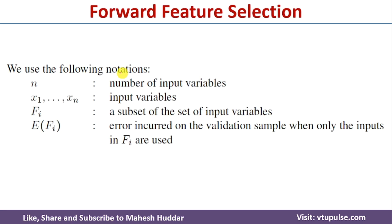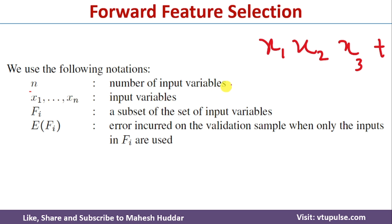In forward feature selection, we use the following notations. N is the number of input variables. Let us assume that we have been given a dataset where three features or input variables are there, so N will become three. We use x1, x2, ..., xN as the input variable names. In this case, we have three features, so we will name them x1, x2, x3, and t is the target. Fi is a subset of this set of input variables. Initially, we will set zero features in this subset, and then we will add one feature at a time.